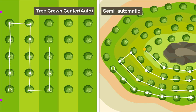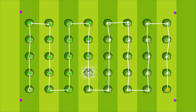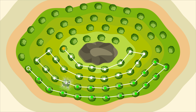In spot spring, there are only two types: tracron center auto and semi-automatic, which have the same meaning as the route types in continuous spring. The difference is that spot spring only sprays at the center of the tree and does not spray in other areas.